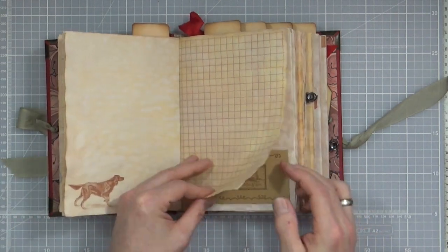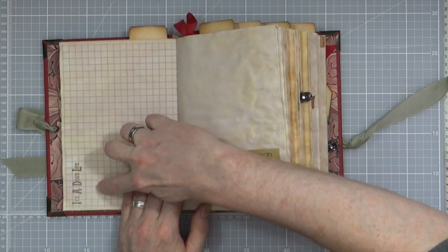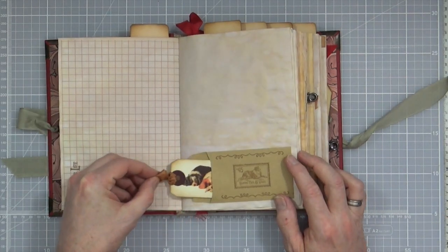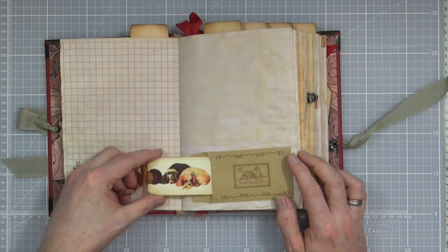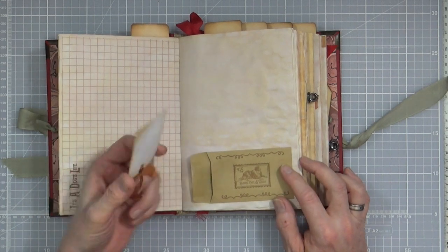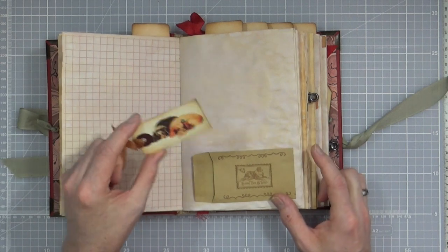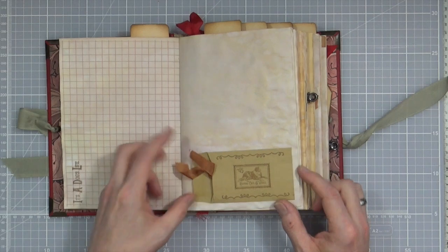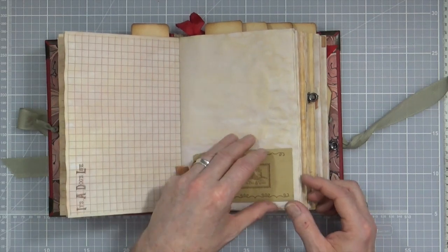We've also got some graph papers, some little stamping and also we have some little tags that fit that sit inside these little pockets or envelope pockets so you can do little bits of journaling notes or whatever you want to do little hidden messages.